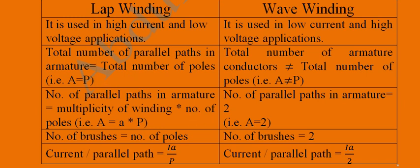The second point: the total number of parallel paths in the armature equals the total number of poles, expressed as A = P. This is the mathematical description for lap winding. In the case of wave winding, the total number of parallel paths in the armature is not equal to the total number of poles — they are unequal.